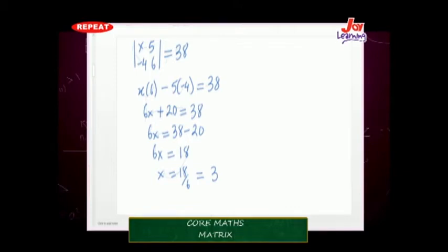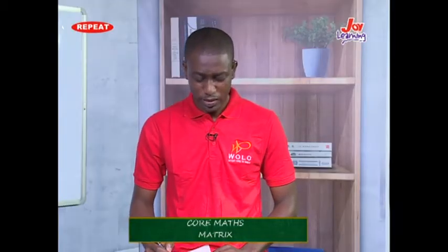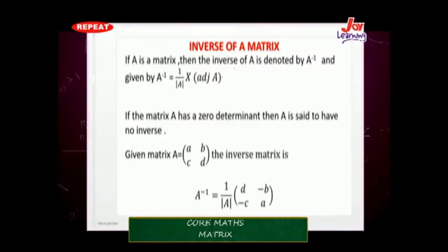Now let's look at an important concept: the inverse of a matrix. If A is a matrix, then the inverse of A, denoted A inverse, is given by 1 over the determinant of A, times the adjoint of A. If the determinant of A is zero, then matrix A has no inverse.